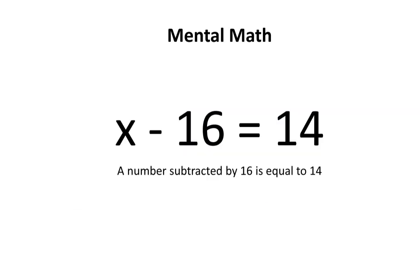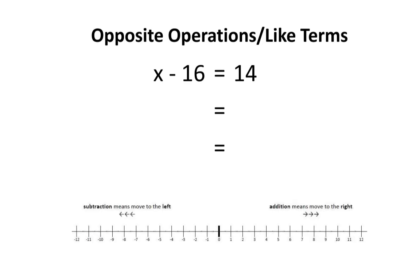In our next example, a number subtracted by 16 is equal to 14. In other words, x subtract 16 equals 14. What could this number be? Using mental math might be a little difficult, since these are unfriendly numbers — these are pretty big numbers. Therefore, I would recommend using the technique we just learned earlier. Look at the equation x subtract 16 equals 14. These two terms would be like terms, since they are both numbers.